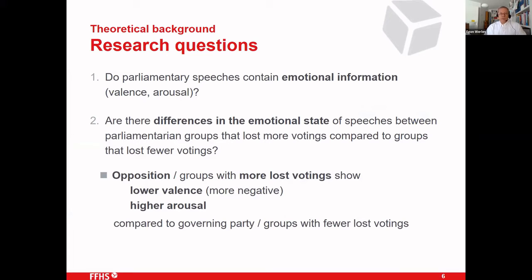Our research questions were: first, do parliamentary speeches contain emotional information — specifically valence and arousal — and second, are there differences in the emotional state of speeches between parliamentary groups that lost more votes compared to groups that lost fewer votes? We chose this operationalization because in Swiss federal and cantonal parliaments there is no true opposition, so we defined opposition as groups that lose more votes. Groups with more lost votes are defined as opposition, and the opposition should have lower valence — more negative emotions — and higher arousal.